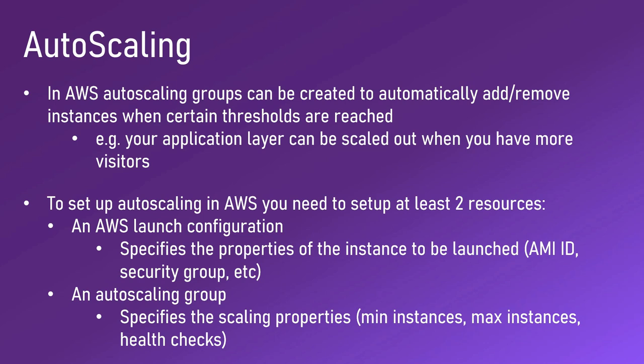To set up auto scaling in AWS you need to set up at least two resources. First, you need an AWS launch configuration - this specifies the properties of the instance to be launched, like the AMI ID, the security group, and so on. Second, an auto scaling group - this specifies the scaling properties: the minimum number of instances, the maximum number of instances, and how health checks should be performed. Auto scaling groups can also do health checks, meaning that when one instance stops working, the auto scaling group can start a new instance for you.